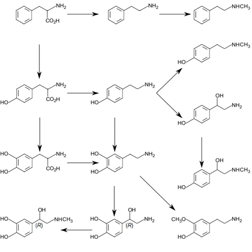Catecholamines are derived from the amino acid tyrosine, which is derived from dietary sources as well as synthesis from phenylalanine. Catecholamines are water-soluble and are 50% bound to plasma proteins in circulation. Included among catecholamines are epinephrine, norepinephrine, and dopamine.